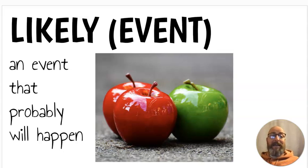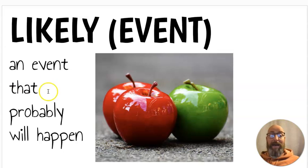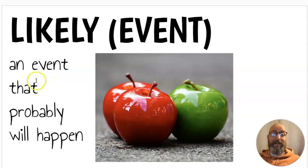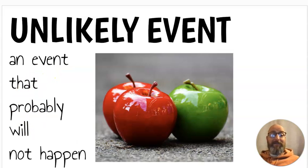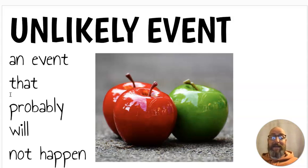A likely event is an event that will probably happen. If three apples are in a basket and I reach in and grab one, I'm likely to get a red apple because there's more red than green. An unlikely event is an event that will probably not happen. So if I were reaching into that same basket and pulled out a green apple, that's an unlikely event — it could happen, but it's unlikely.